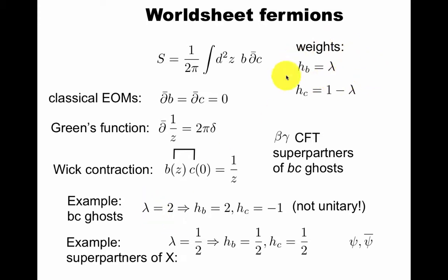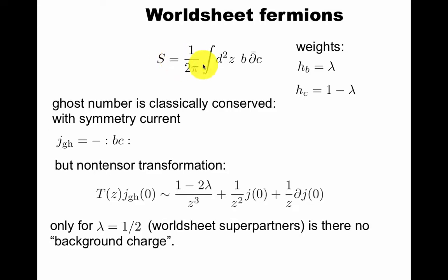What's this useful for? We have ghost fields that are like this. For them, lambda equals two, so the weights are two and minus one. It's not unitary because hc is minus one. Another example is lambda equals one half, gives you the psi psi bar that you're used to. Those would be the usual worldsheet fermions. They have weight one half. B and C are a slight generalization of the usual fermions that turn out to be the superpartners of the bosonic embedding fields x.